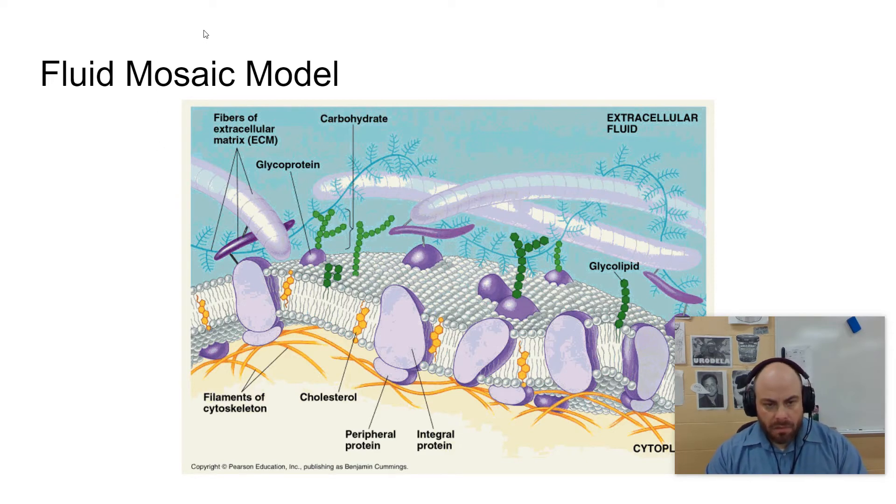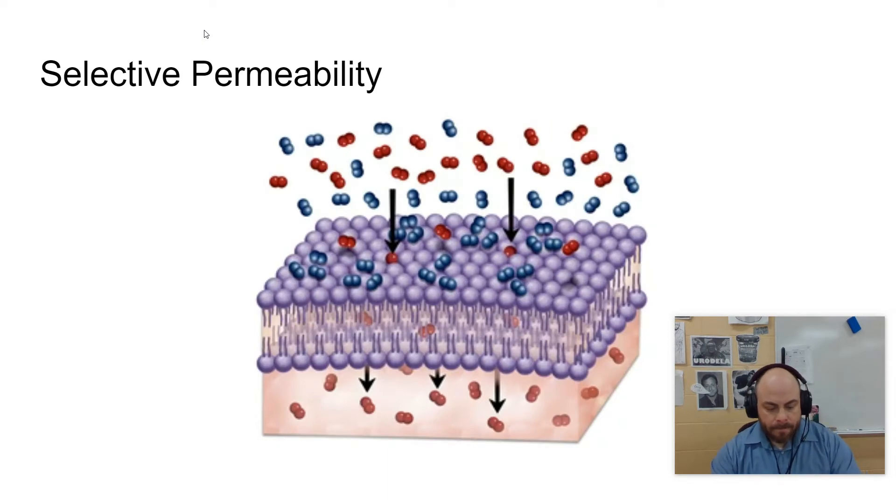One of the functions of the plasma membrane is selective permeability. Sometimes you'll see it called selectively permeable, which is just the backwards opposite of that. What does that mean? It only allows certain things in. You can see this little picture here showing that it allows the passage of the red dots and not the blue dots.